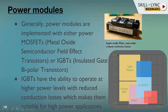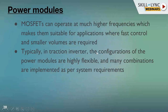In this figure you can see an example of an IGBT power module. Such power modules are well capable of handling hundreds of amperes of current and likewise hundreds of volts. For MOSFETs, they can be operated at much higher frequencies, which makes them a very good choice for EVs because fast control is often a key requirement in an electric vehicle.